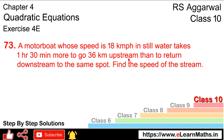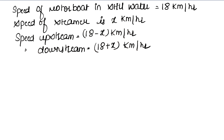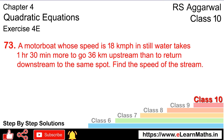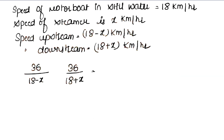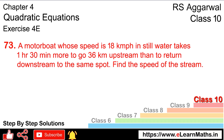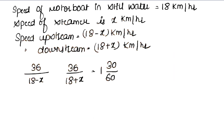We are travelling 36 km upstream and 36 km downstream. It takes 1 hour 30 minutes more to go upstream. Converting to hours: 1 hour 30 minutes equals 3/2 hours. Since there is more time upstream, we subtract — so the equation is: 36/(18 minus x) minus 36/(18 plus x) equals 3/2.